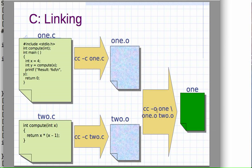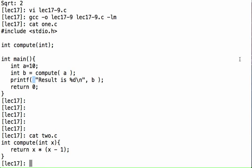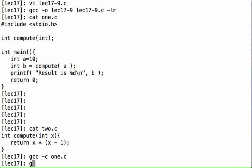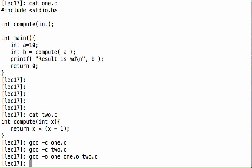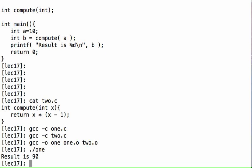Let's try that. gcc minus c one.c and gcc minus c two.c. And let's say gcc minus o one one.o two.o and there we have it. We can run one and we get the result.